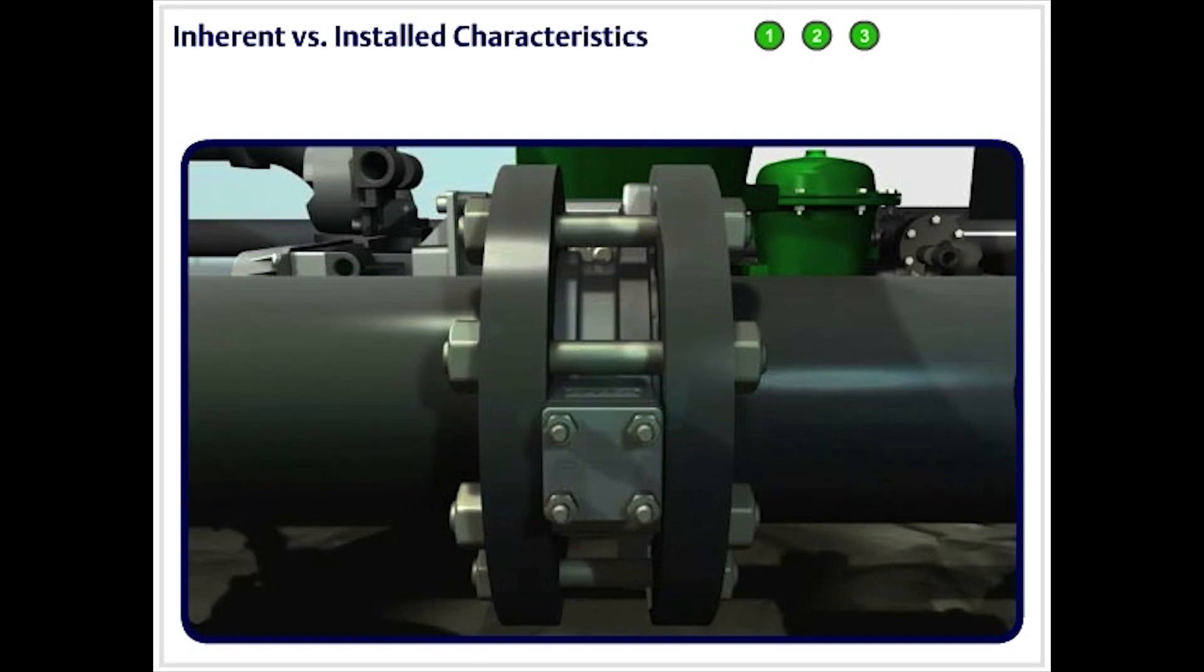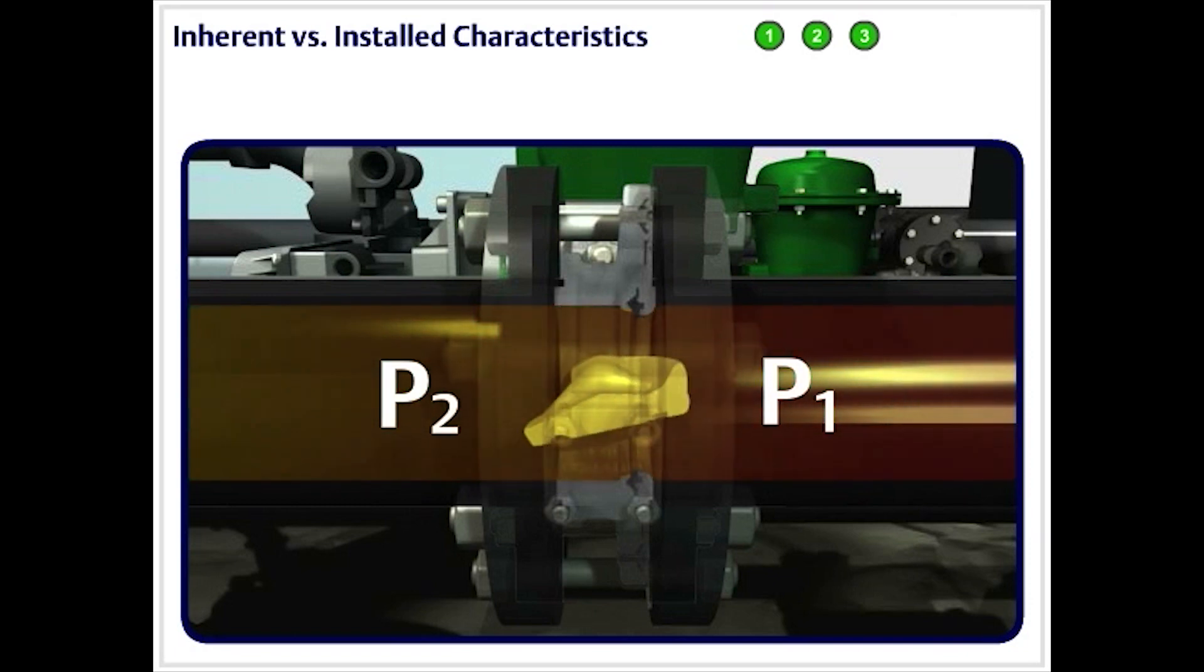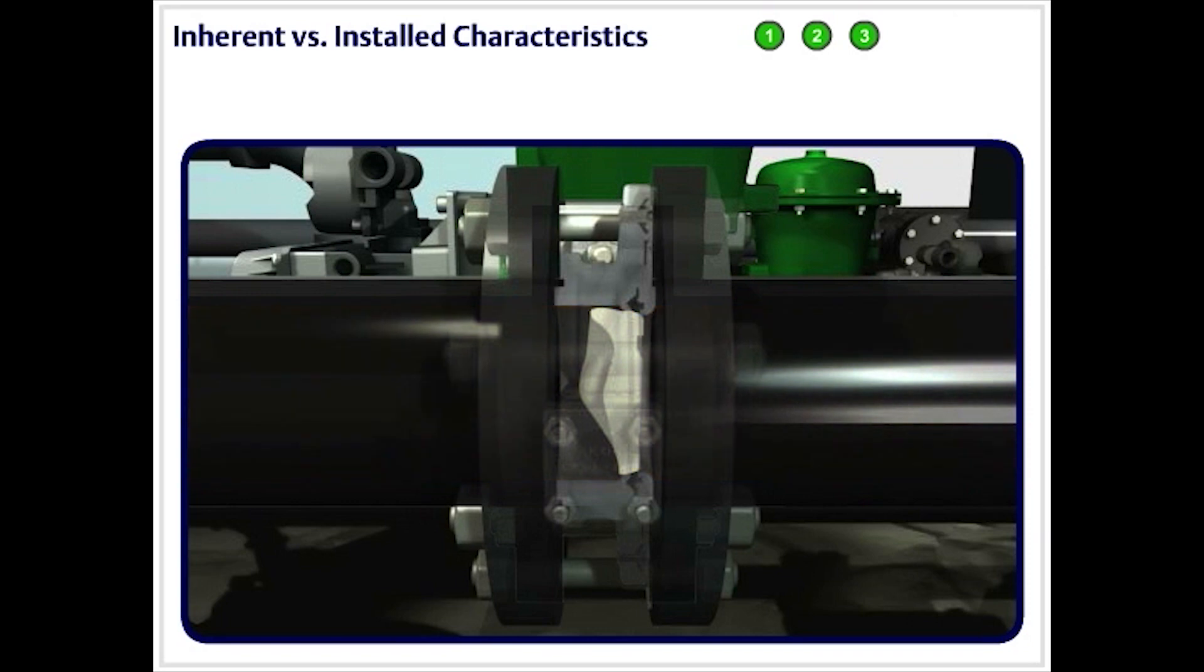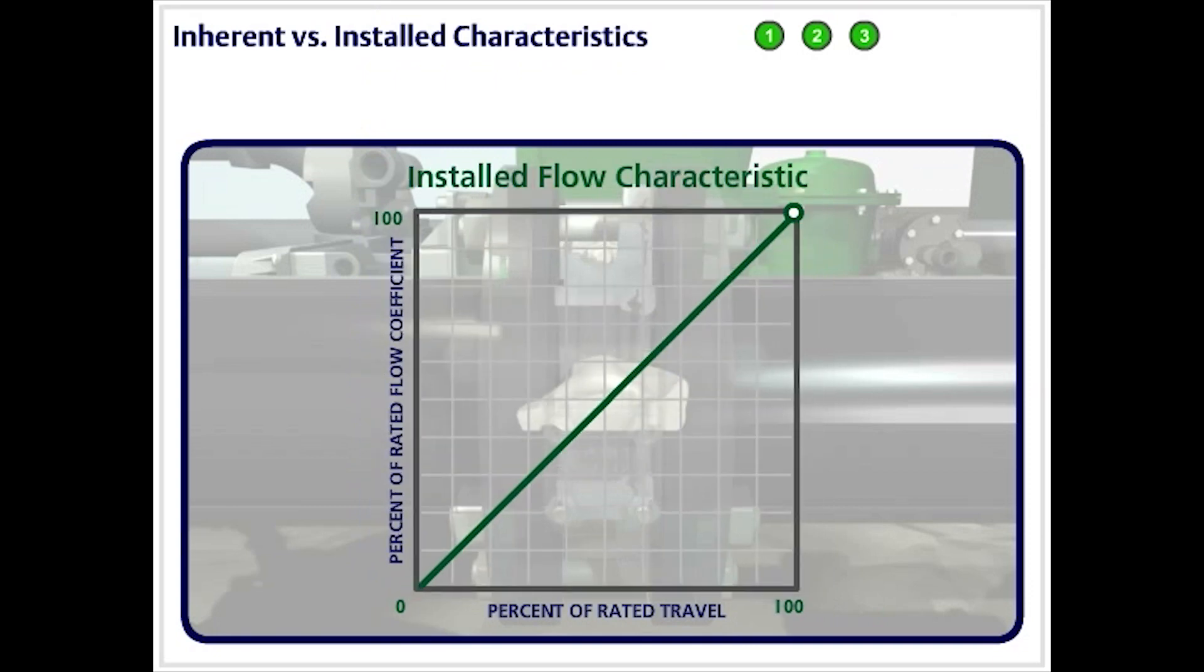The installed flow characteristic determines to a great degree just how well the valve will perform against changes in pressure and flow. It is important to note that the control disk's inherent equal percentage flow characteristic translates into an installed linear flow characteristic.